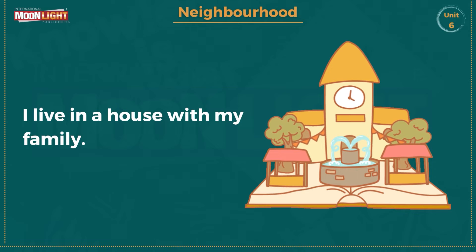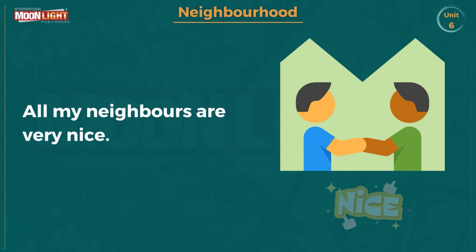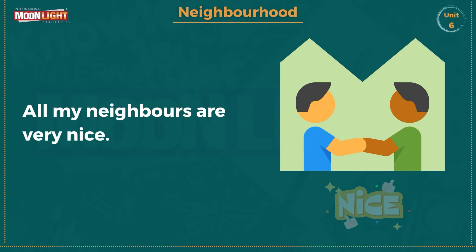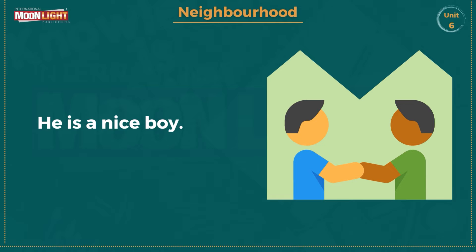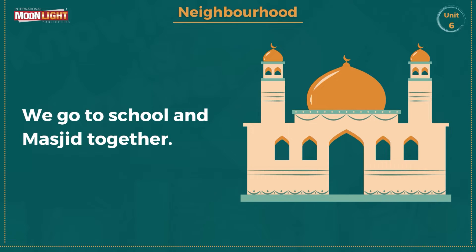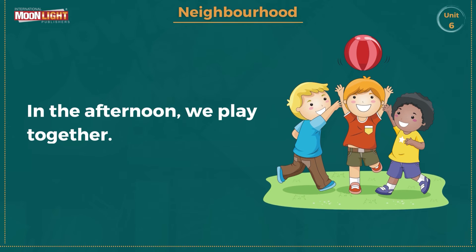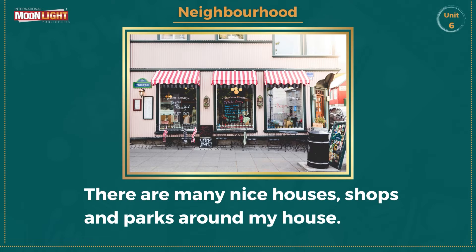A house is a place where we humans live. I live in a house with my family. The people who live around us are our neighbors. All my neighbors are very nice. Abdul Sattar is my neighbor — he is a nice boy. We go to school and masjid together. In the afternoon we play together. There are many nice houses, shops and parks around my house.